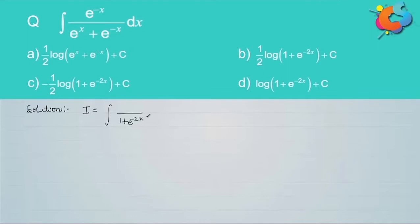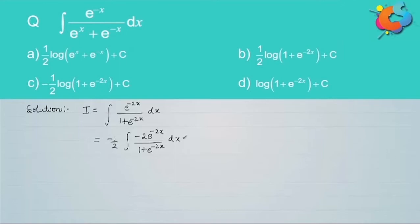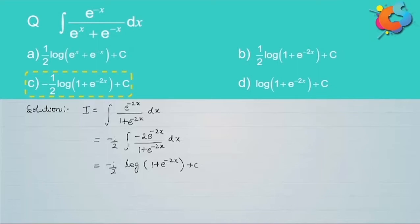Taking e to the x common from the denominator and shifting to the numerator, the integrand becomes e to the minus 2x over (1 plus e to the minus 2x) dx. This is rewritten as minus one half times integral of minus 2 e to the minus 2x over (1 plus e to the minus 2x) dx, since the derivative of (1 plus e to the minus 2x) is minus 2 e to the minus 2x. This is exactly of the form f′(x) over f(x), so its integral is minus one half times log of (1 plus e to the minus 2x) plus C. Hence the third option is correct.